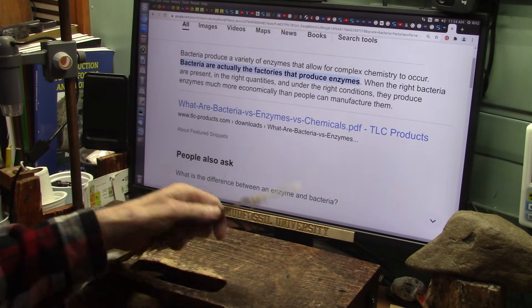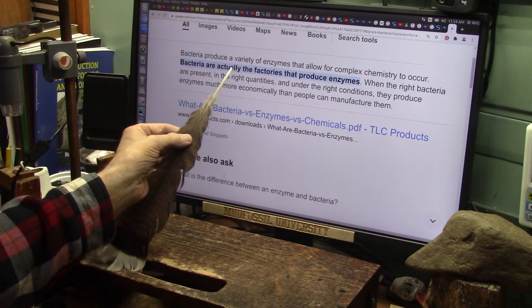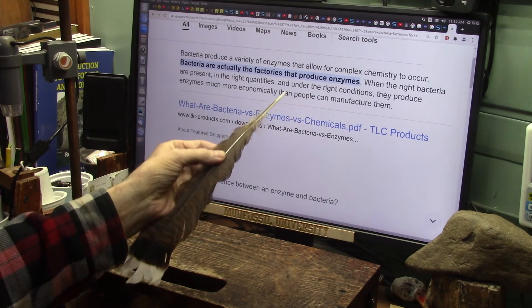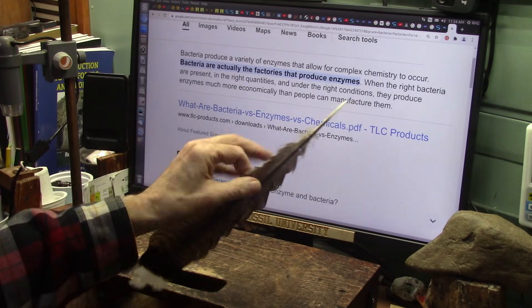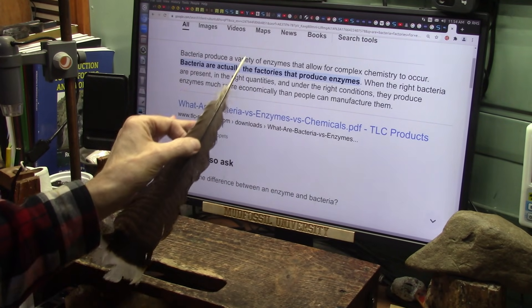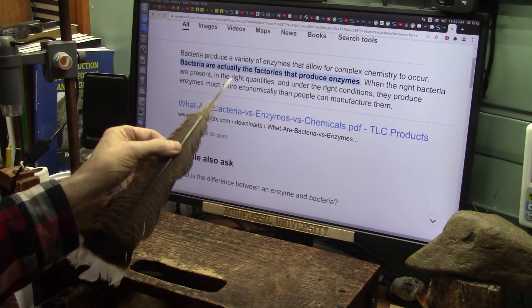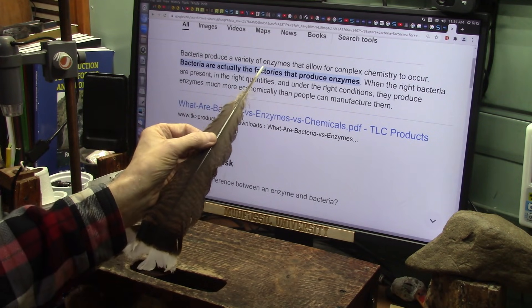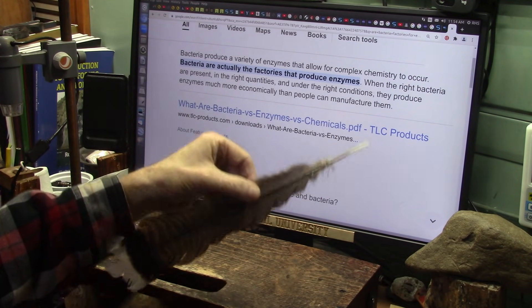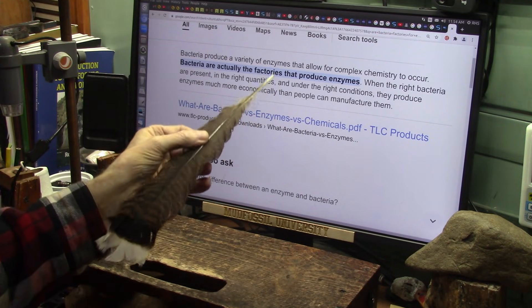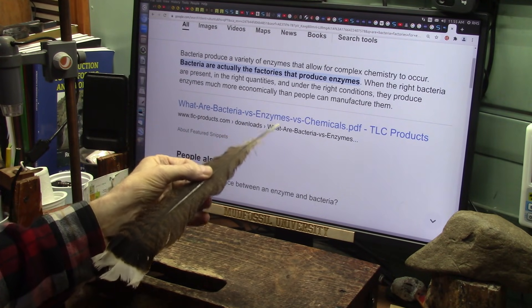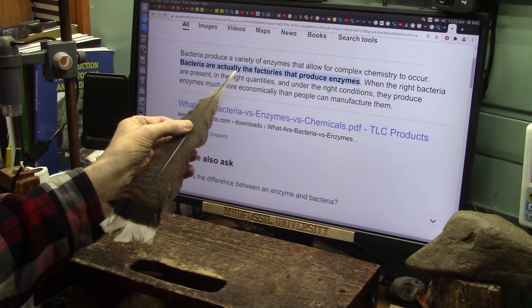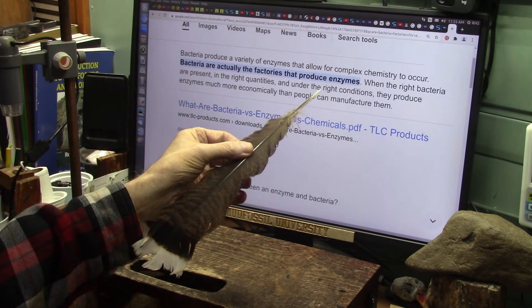Before we get into this, bacteria are the factories that produce the enzymes in our bodies. If somebody says that's done in the pituitary gland or whatever, no. There's bacteria that live there that create that specific enzyme, yes, but that organ does not produce it. Bacteria are the factories that produce enzymes.